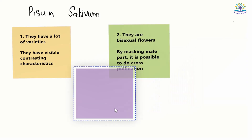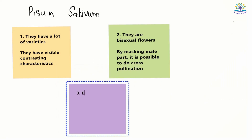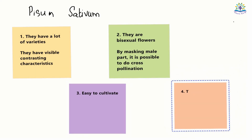Pea plants are also easy to cultivate and different breeds are easily available. They are annual plants — that is, you can see the yield in a year — so Mendel didn't have to wait long to observe the results of his experiment. For all these reasons, Mendel used pea plants. The key points for this question are: garden pea plants have lots of varieties and visible contrasting traits; they are bisexual but cross-pollination is possible by removing the male part; they are easy to cultivate; and as annual plants, results can be observed in a shorter duration.